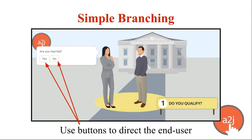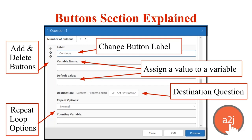Simple branching is done by buttons. Every question has to have at least one button because that's how you move the end user to the next question. For example, with two buttons — Are you married? Yes or No — yes takes them down one path, no takes them down another. It's done in the question design window, where at the top you author the text and add the learn more, in the middle section you do the fields, and you scroll down to the button section to handle branching.